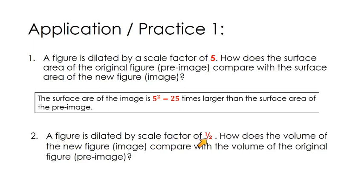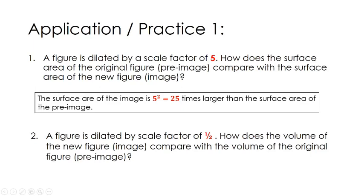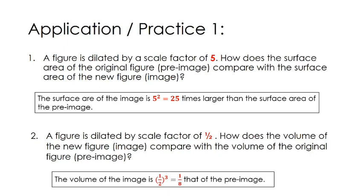A figure is dilated by a scale factor of one half. Remember, a scale factor of one half is going to be a reduction — that means our new figure is smaller. How does the volume of the new figure, the image, compare with the volume of the original figure, the pre-image? You might think that multiplying each dimension by one half would make the volume one half the original, but that is not the case. The volume of the image is one half to the third power — you have to take your scale factor and cube it. So the volume of your new figure is one eighth that of the pre-image.